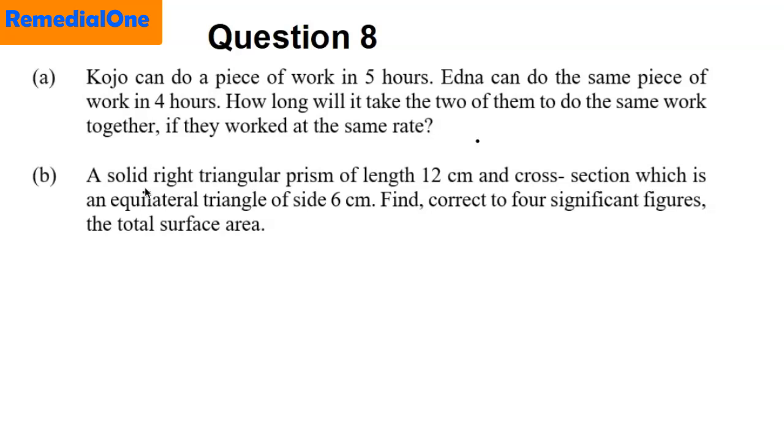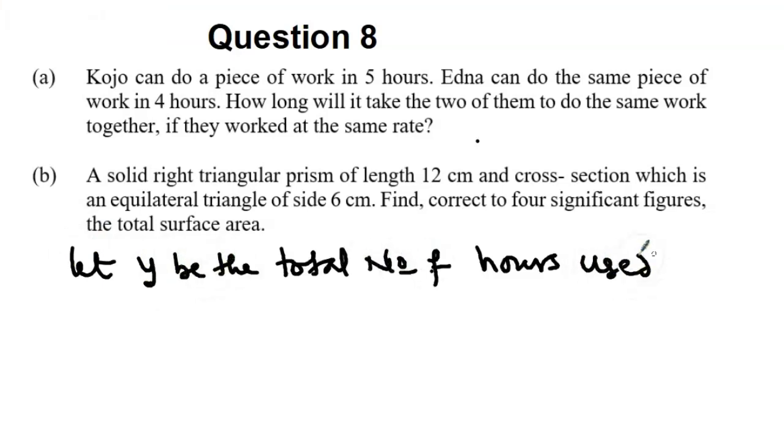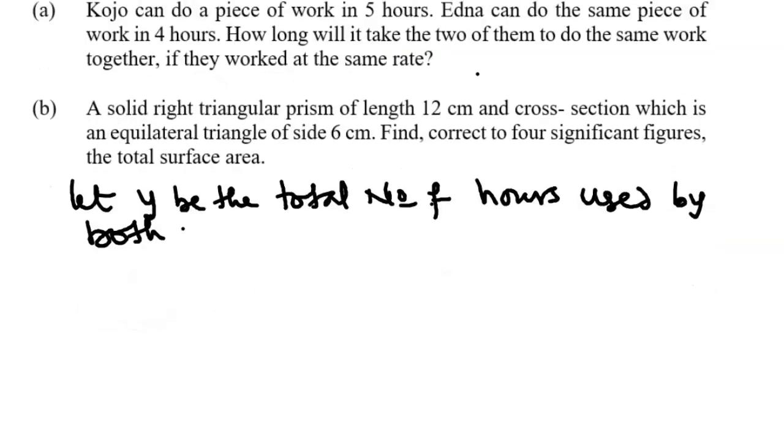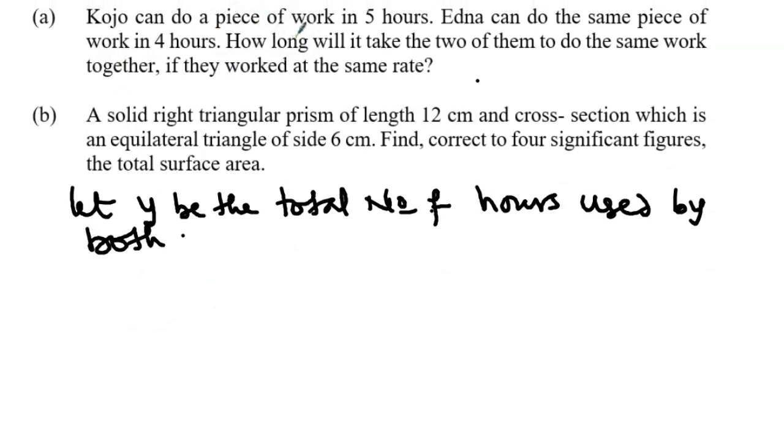So let's see the solution. First, part A, we want to find the total number of hours if the two, that's Kojo and Edna, work together at the same rate. This is a question on rate and care must be taken when you are answering such a question. Now one can do the work in 5 hours and then the other can do the work in 4 hours. So we start by saying let Y be the total number of hours used by both.